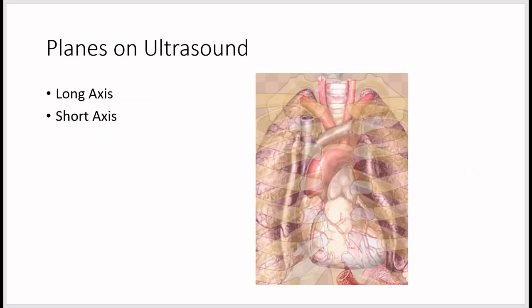There are two planes on the ultrasound to mention: the short axis view and the long axis view. For the long axis view, the probe marker points to the patient's right shoulder. For the short axis view, the probe marker points to the patient's left shoulder.